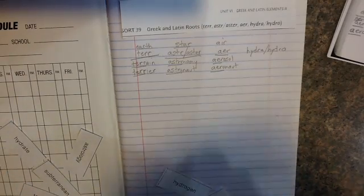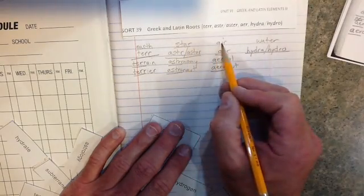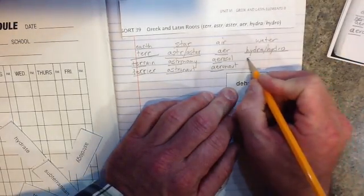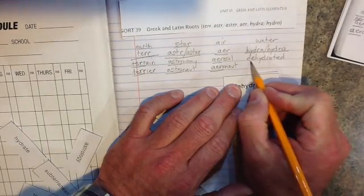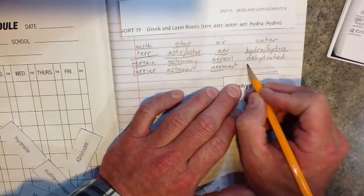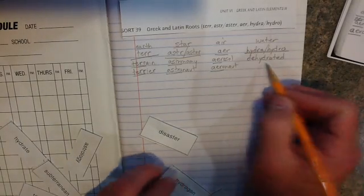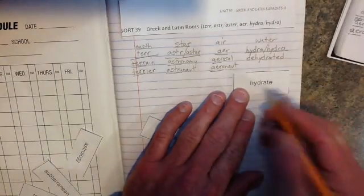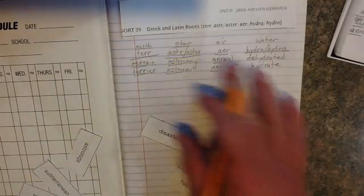Let's do the hydra hydro and you might already know this one, but this one has to do with water: earth, stars, air, and water. When we talk about dehydrated, we're talking about D means not hydrated. Hydrate is to combine with water. So when you dehydrate it means you are not combined with water or you have no water, and so you get dehydrated. And our next word is the opposite of dehydrate, which is to hydrate.